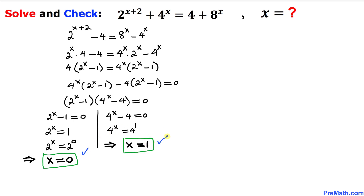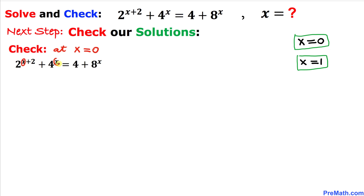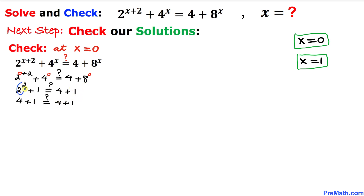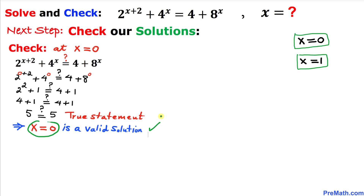So x equals 0 and x equals 1 are our solutions. Let's check them one at a time, starting with x equals 0. Replacing x with 0 in the original equation: 2 squared is 4, 4 power 0 is 1, and 8 power 0 is 1. The left-hand side turns out to be 5 and the right-hand side is 5 as well. Both sides are the same, so this is a true statement and x equals 0 is a valid solution.